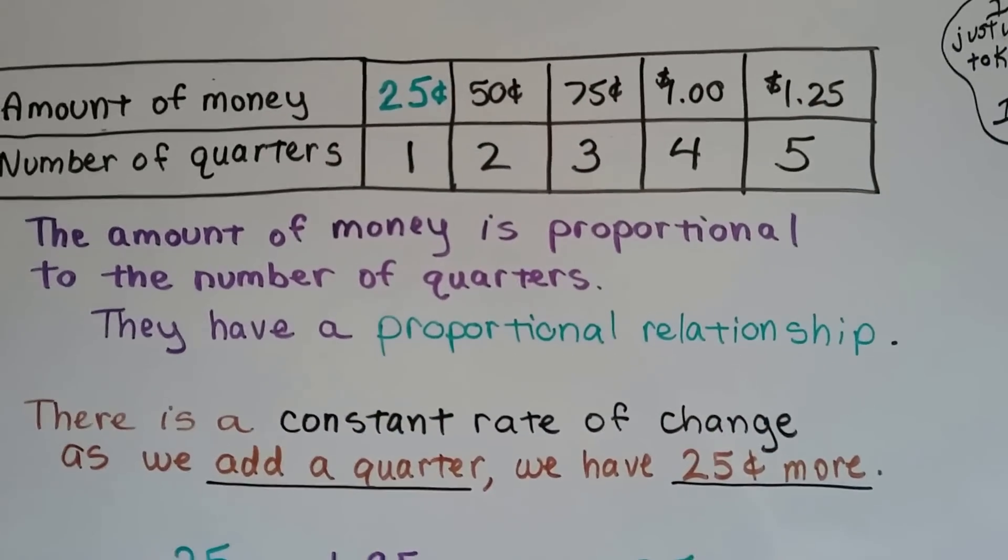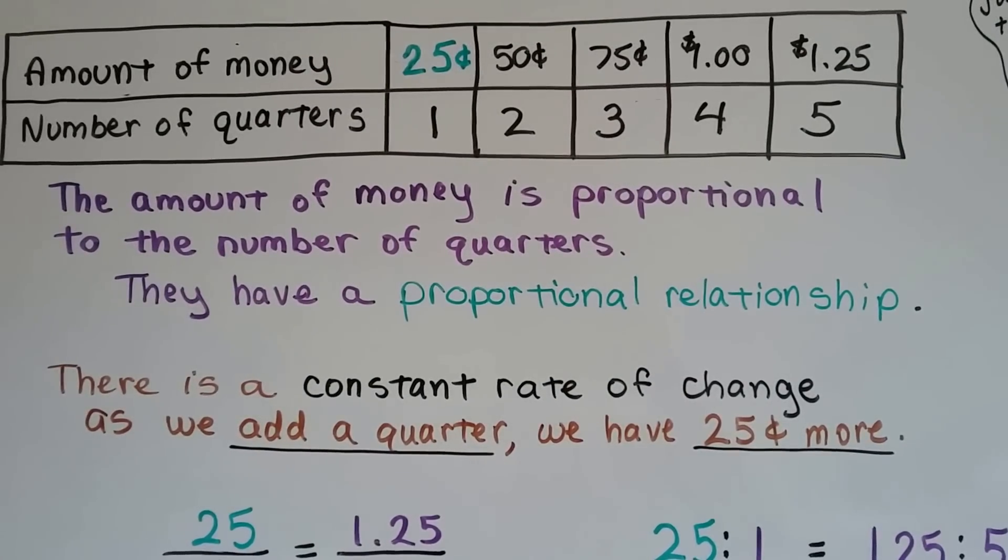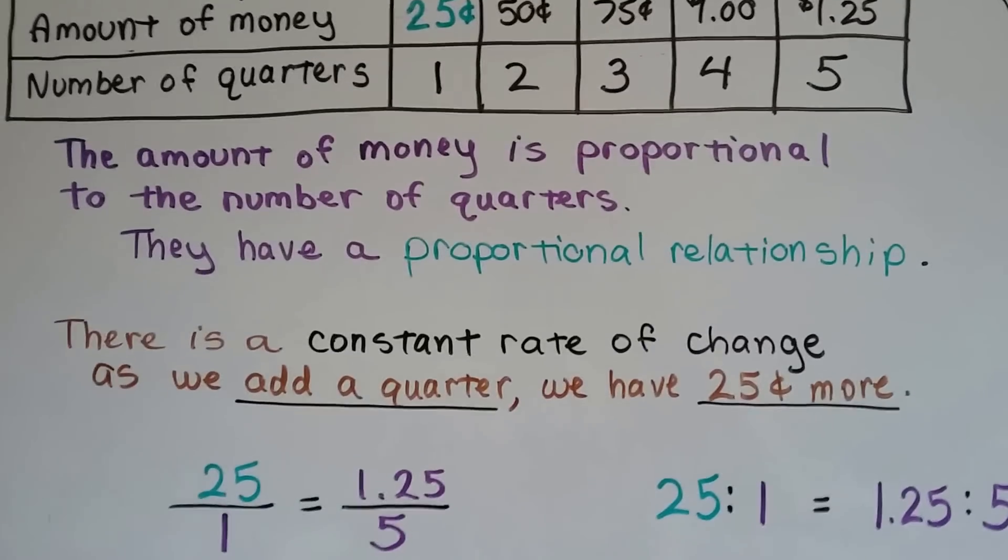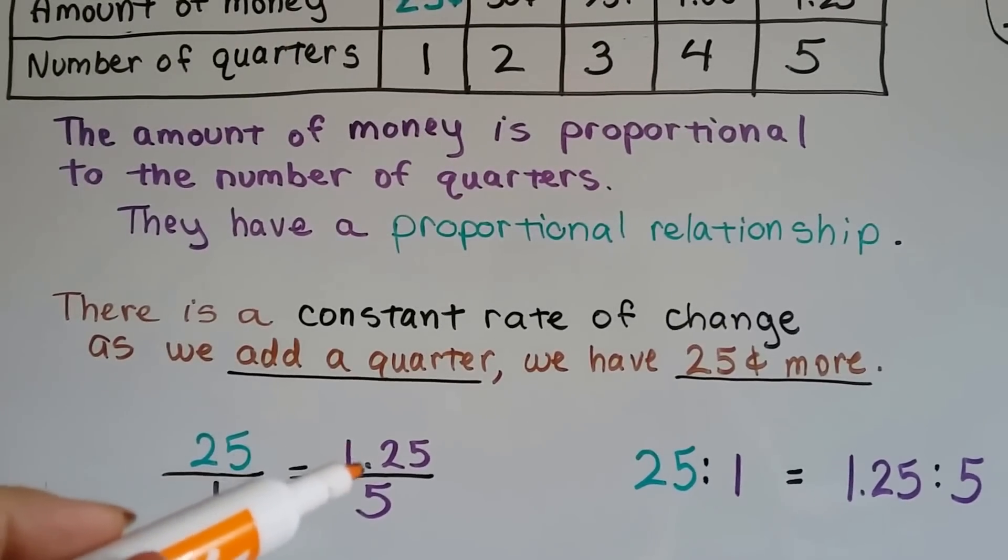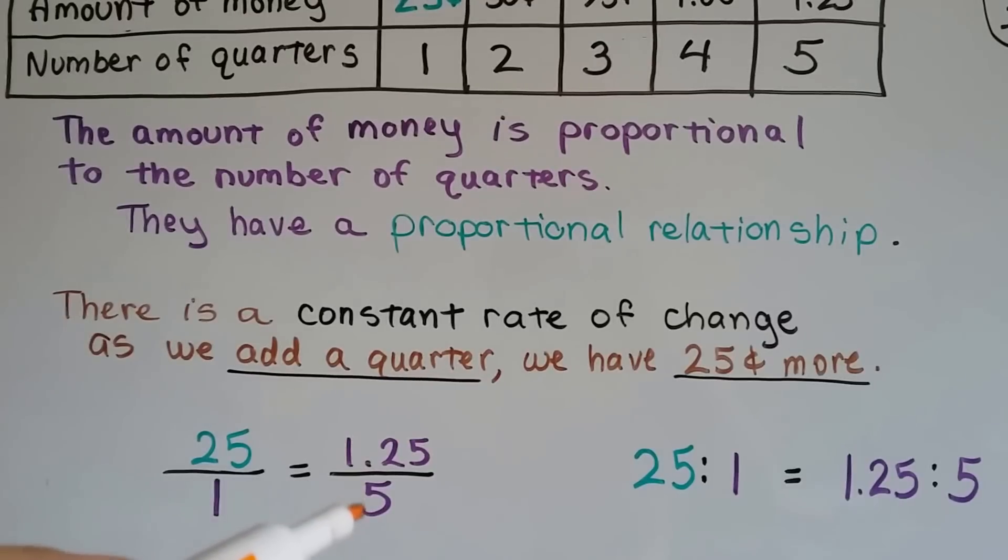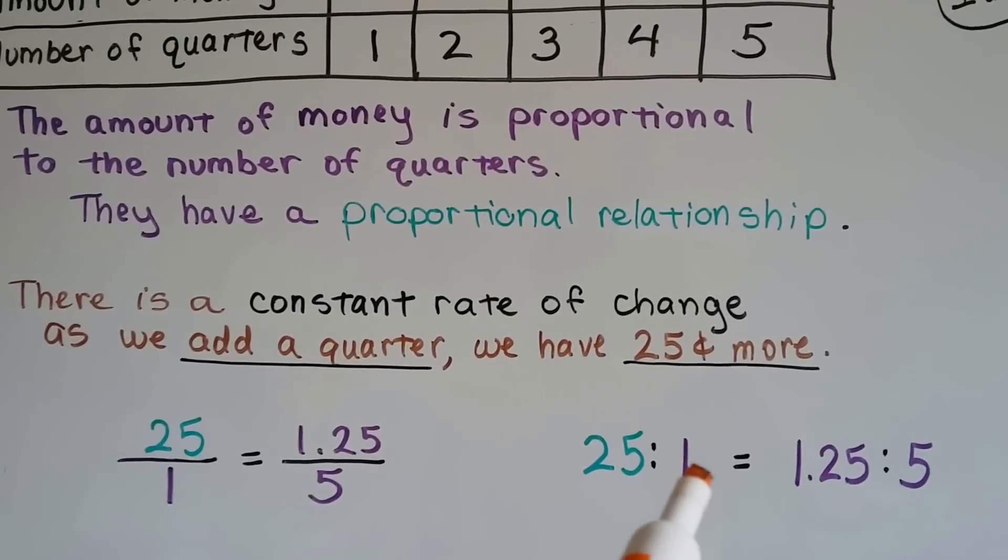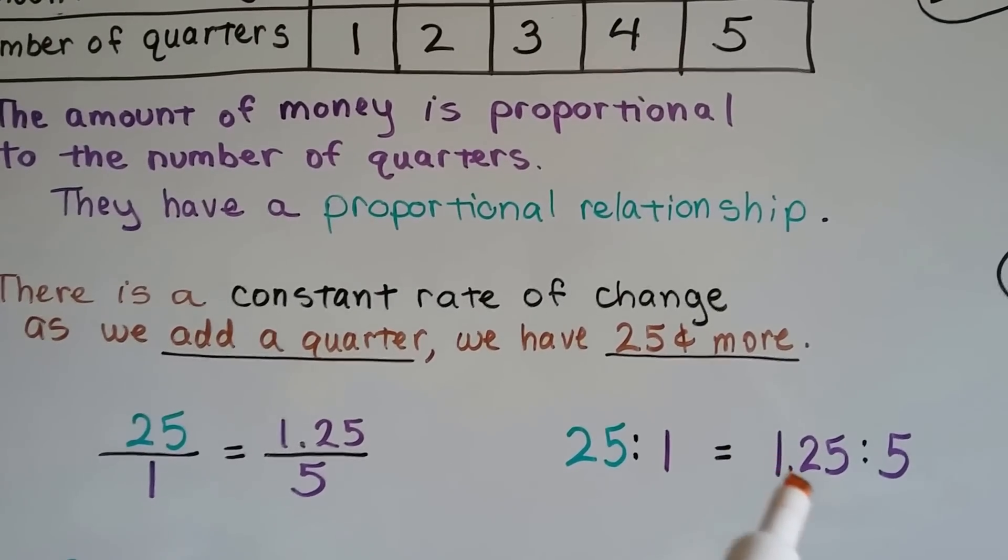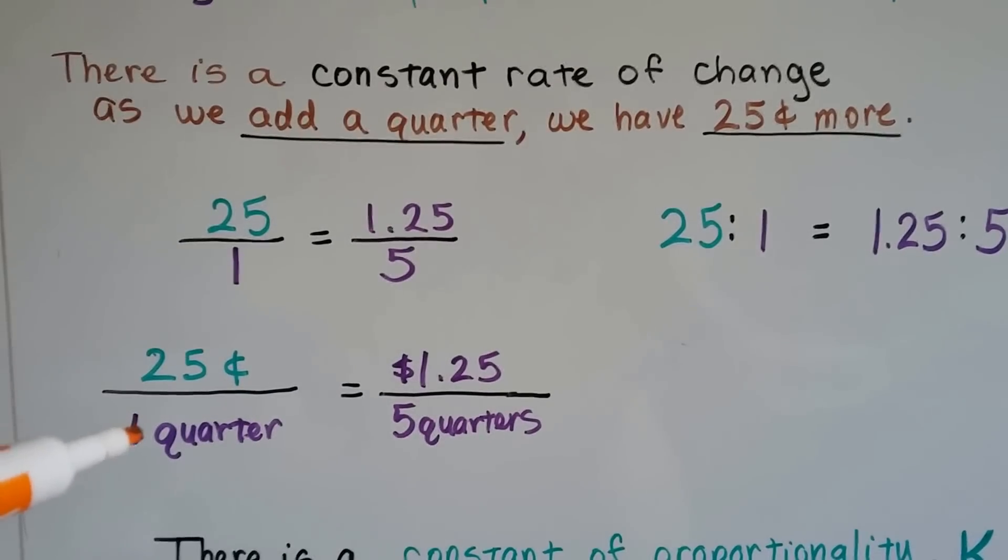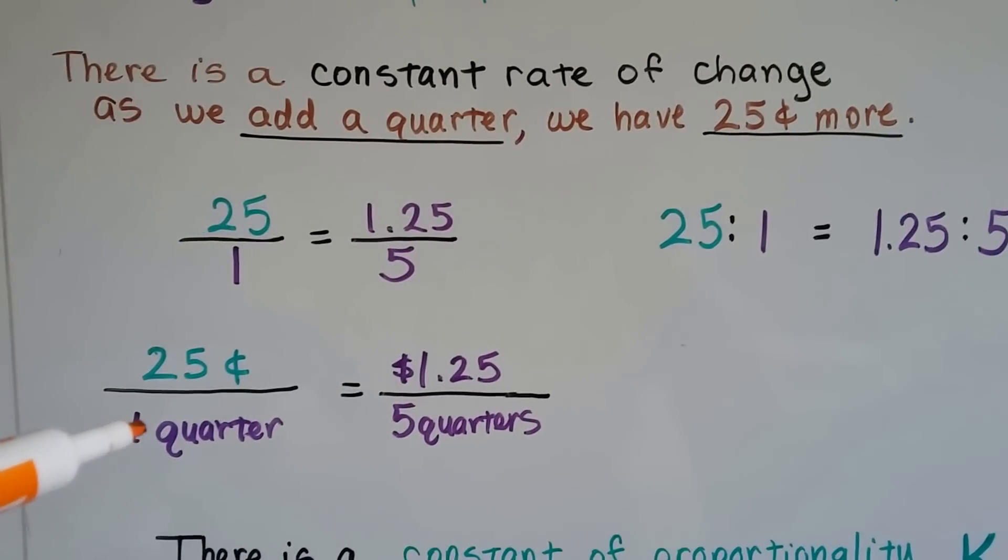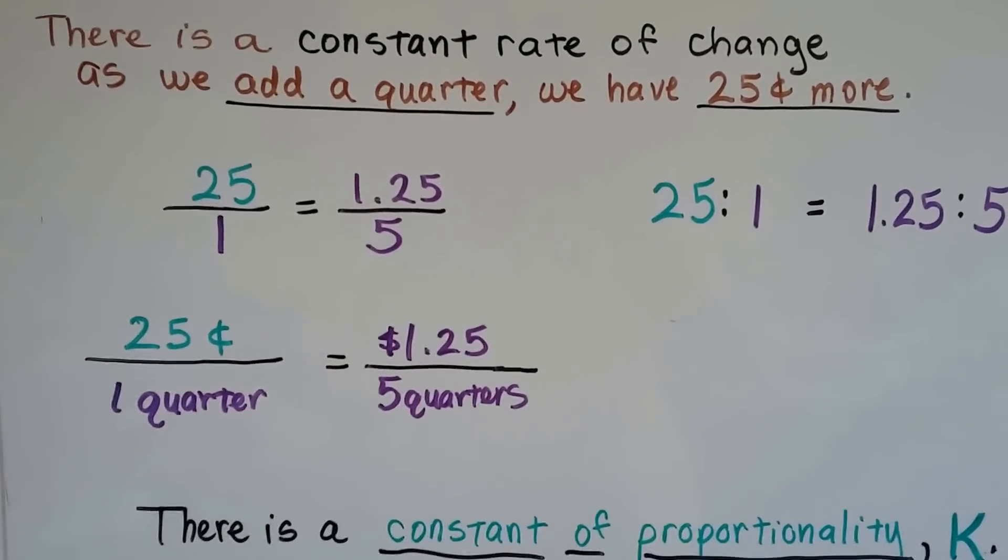They have a proportional relationship with a constant rate of change. As we add a quarter, we have $0.25 more. So $0.25 over 1 equals $1.25 over 5. The ratio of 25 cents to 1 quarter equals 1.25 dollars to 5 quarters. $0.25 divided by 1 quarter equals $1.25 divided by 5 quarters.